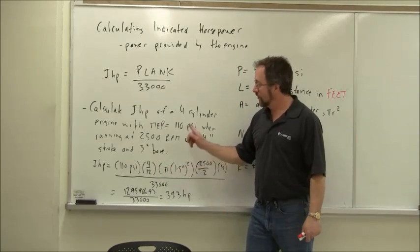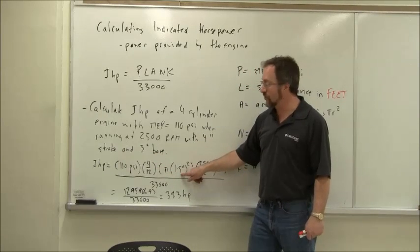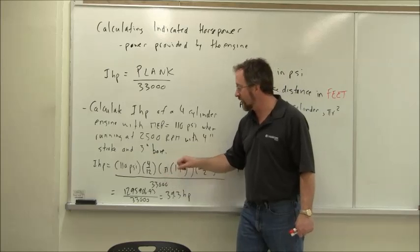Area, take the bore, 3 inches divided by 2 is 1 and a half. Square that for R squared, multiply that by pi, that gives us the area.